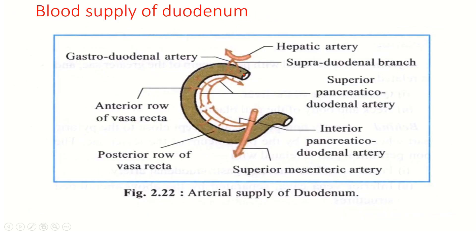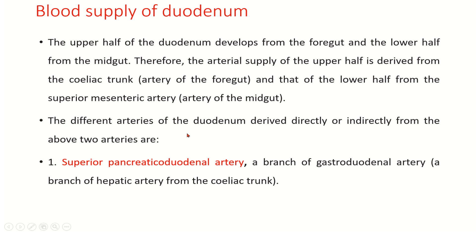Let us see the blood supply of the duodenum. The first, second, third, and fourth parts are visible here. The gastroduodenal artery gives the right gastro-omental artery and the superior pancreaticoduodenal artery dividing into anterior and posterior pancreaticoduodenal branches, while the inferior pancreaticoduodenal artery divides into anterior and posterior branches. Both form anterior and posterior pancreaticoduodenal arterial arcades from which vasa recta arise to supply the duodenum. The upper half of the duodenum develops from the foregut, supplied by the celiac trunk, and the lower half from the midgut, supplied by the superior mesenteric artery.